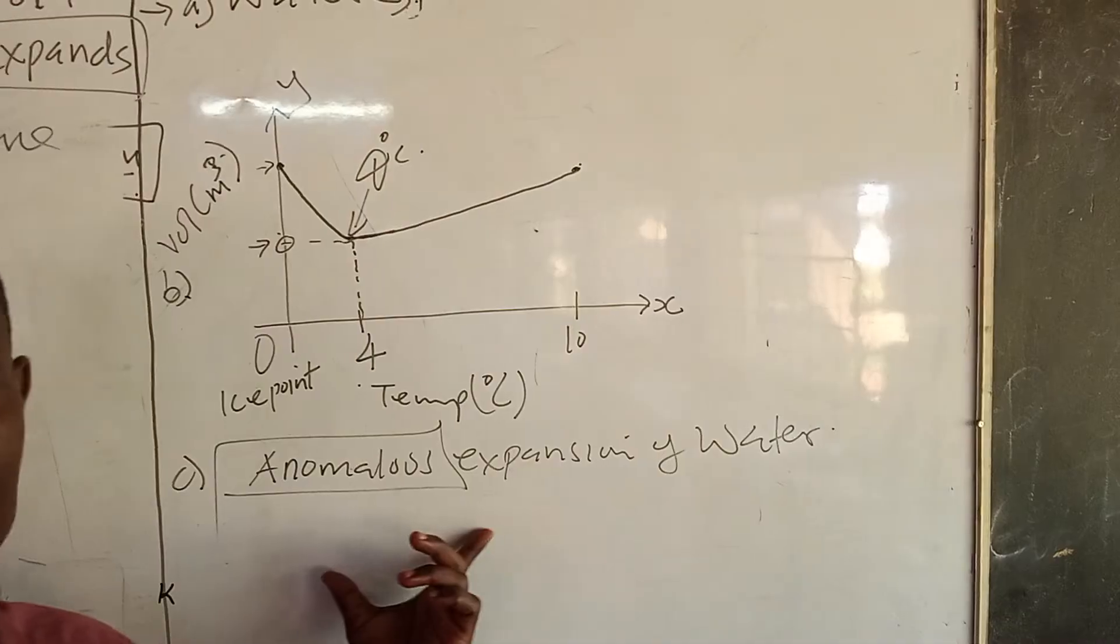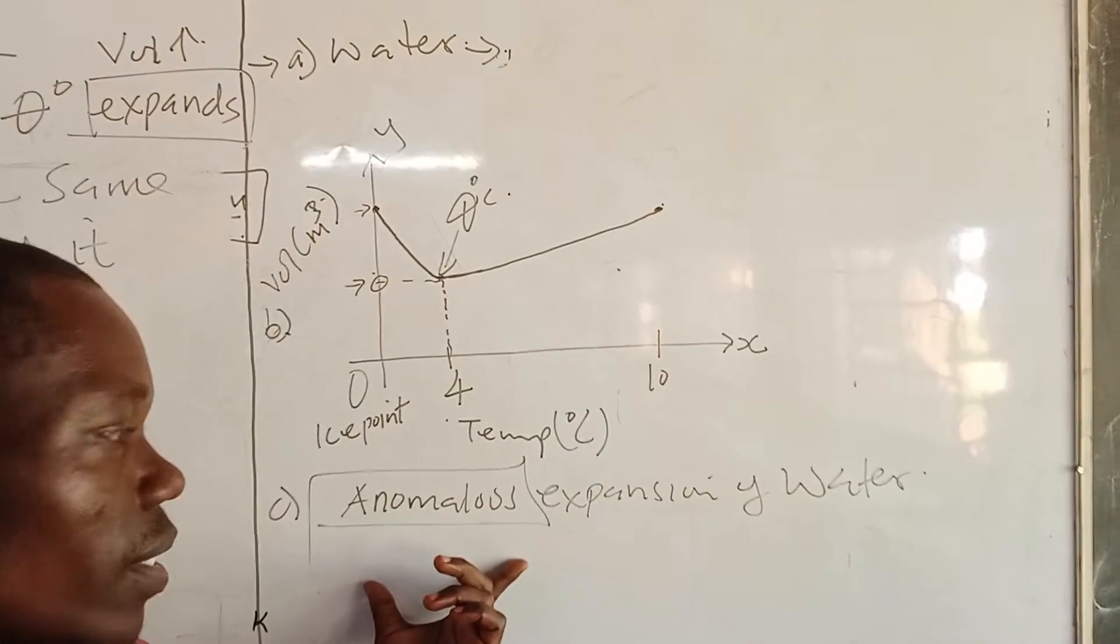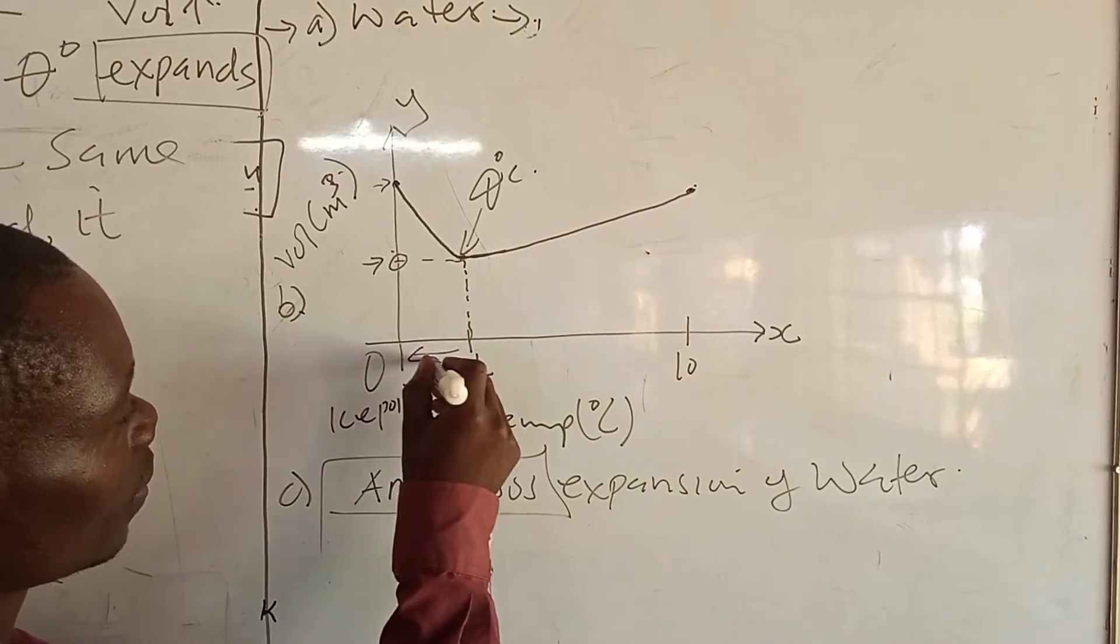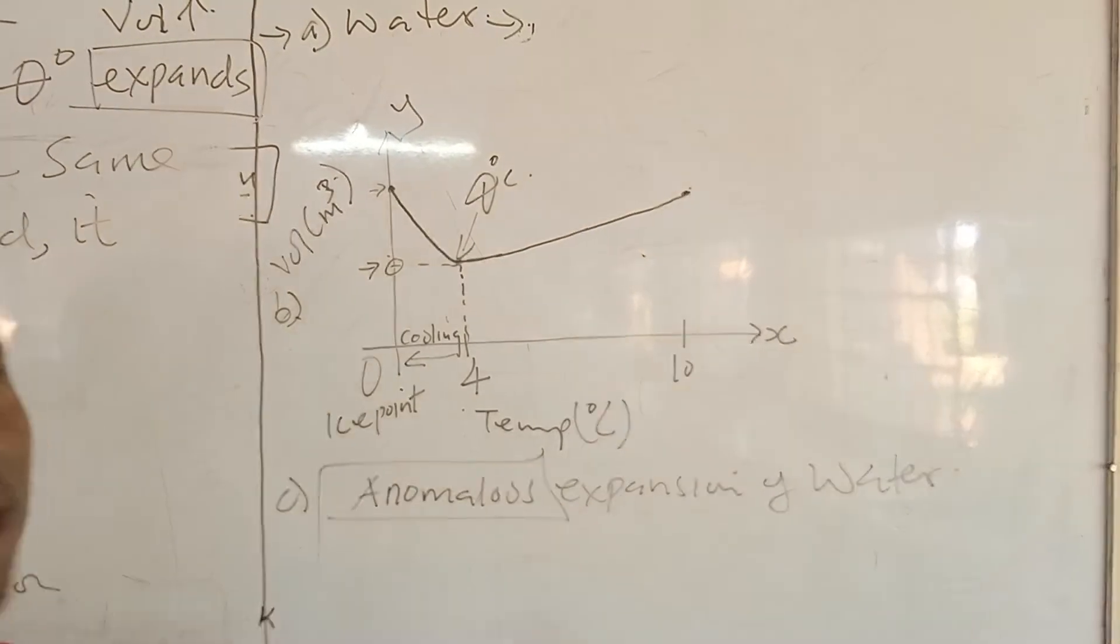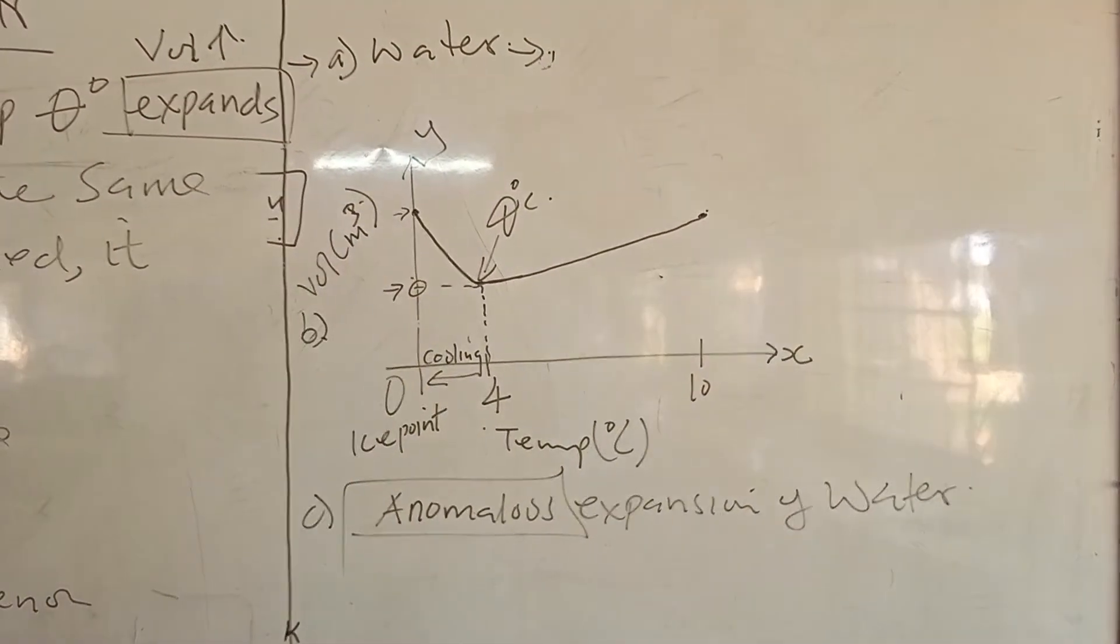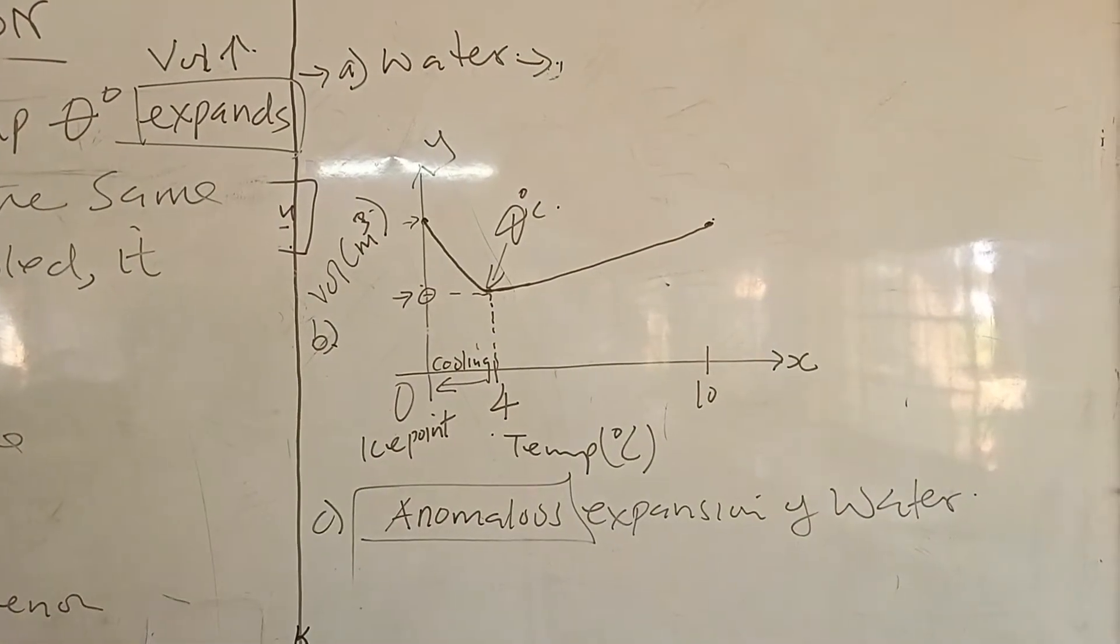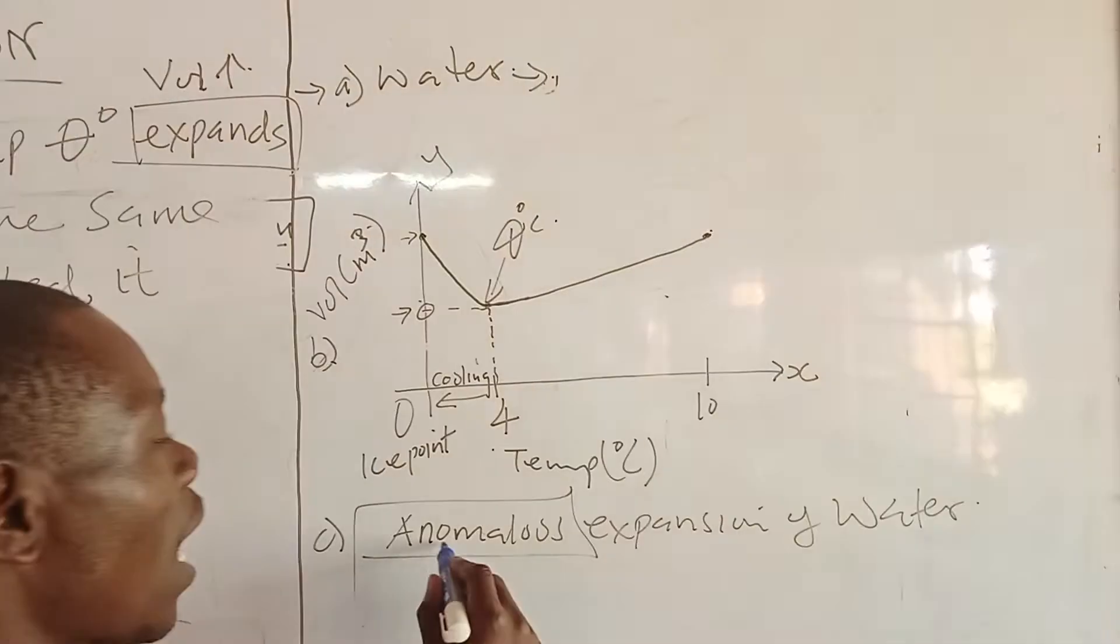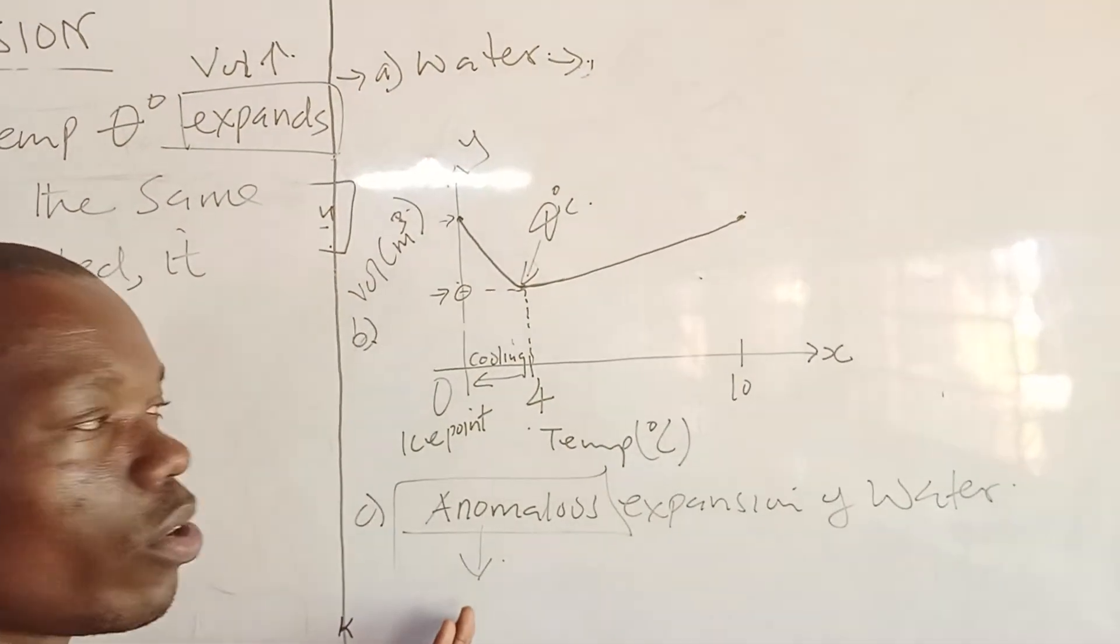Now, the word anomalous means water expands when cooled instead of contracting. Remember, from 4 degrees towards 0 degrees, this one is cooling. We expect any material to contract when cooled. But water, when cooled from 4 degrees to 0 degrees, instead of contracting, it expands. That's why we call it anomalous expansion.